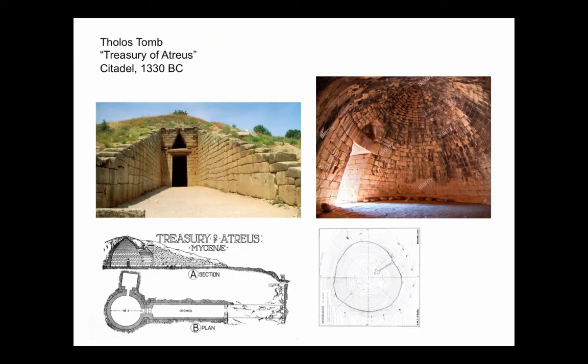We'll see later that this Megaron perhaps plays a role in evolving into the Greek temple. We also see among the Mycenaeans the Treasury of Atreus — originally thought to be a treasury, but it's actually a tomb. They would place bodies in here for a period of time for their reabsorption into the earth and then bury them elsewhere. The pattern is very similar to the Newgrange Passage Mount. We're interested in the vault of the interior — it's not a true dome, but a sort of corbelled dome. We'll talk more about that when we discuss domes in Rome.